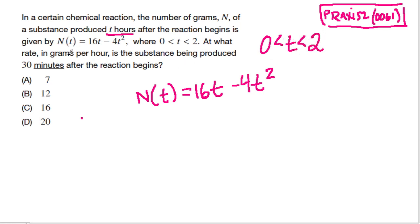At what rate in grams per hour is the substance being produced 30 minutes after the reaction begins? Notice they want to know something about 30 minutes, but we have t in terms of hours. So make sure we pay attention to the fact that 30 minutes equals one half of an hour, and then we're going to deal with this right here. So t is one half.